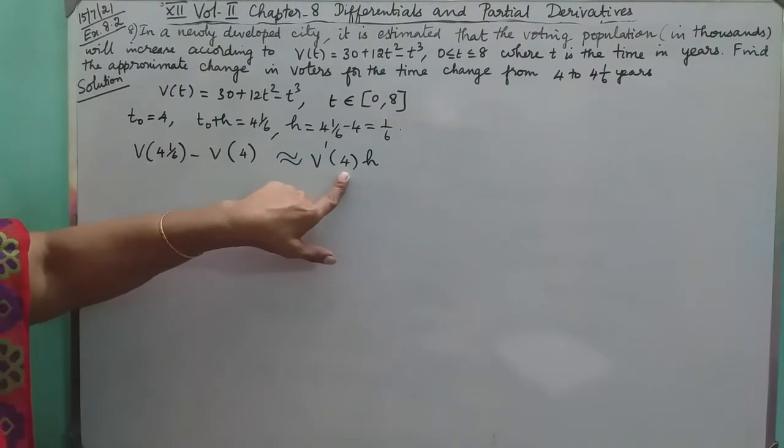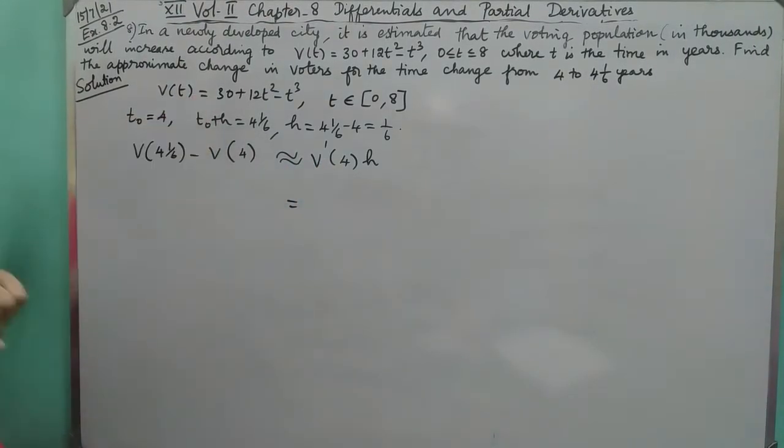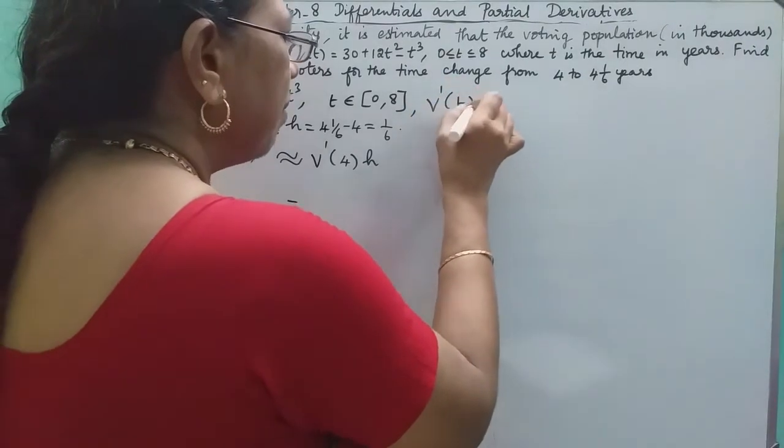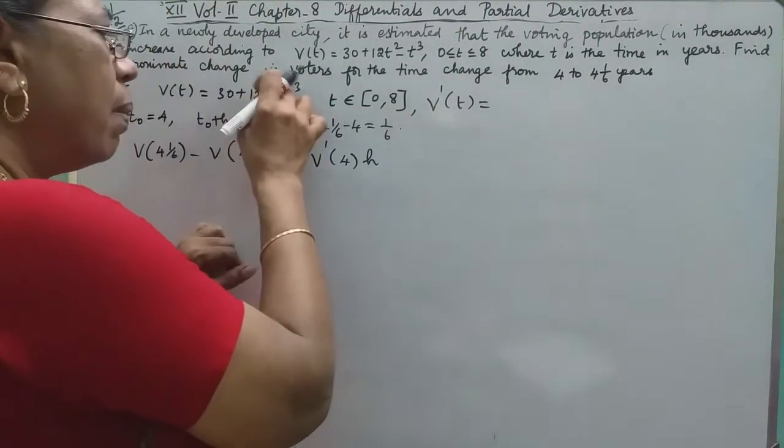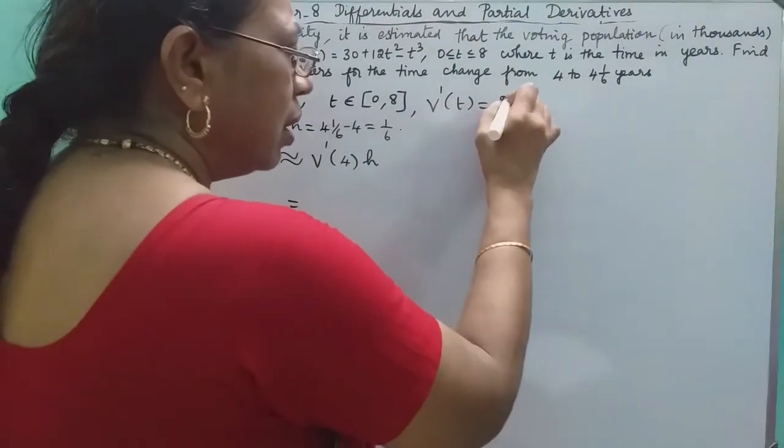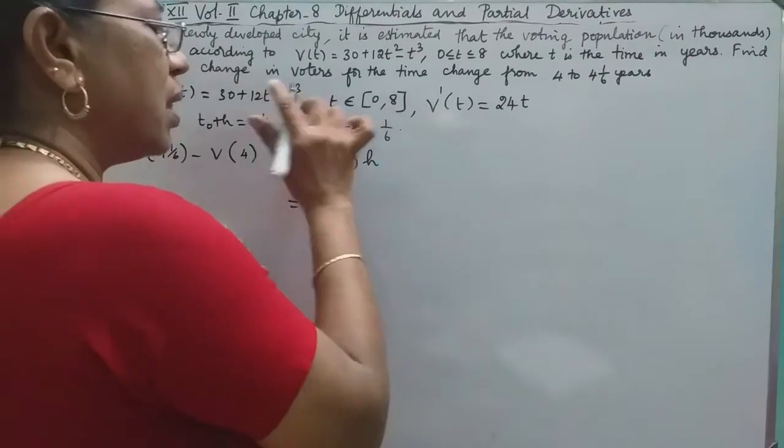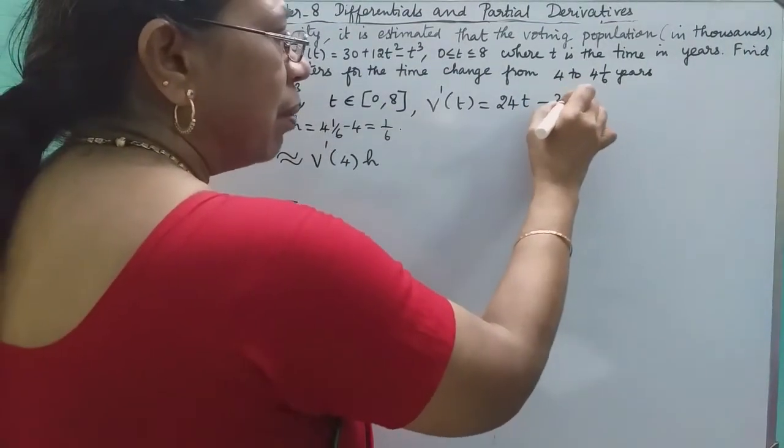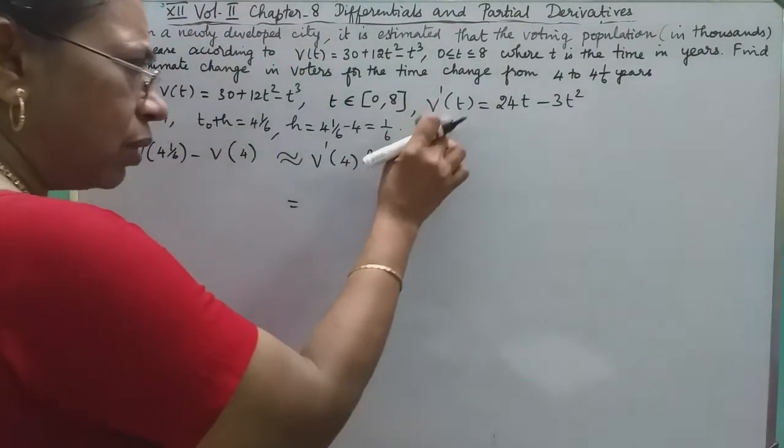Now we differentiate V(t). V'(t): the derivative of 30 is 0, so V'(t) = 24t - 3t². This is the derivative of V with respect to t.